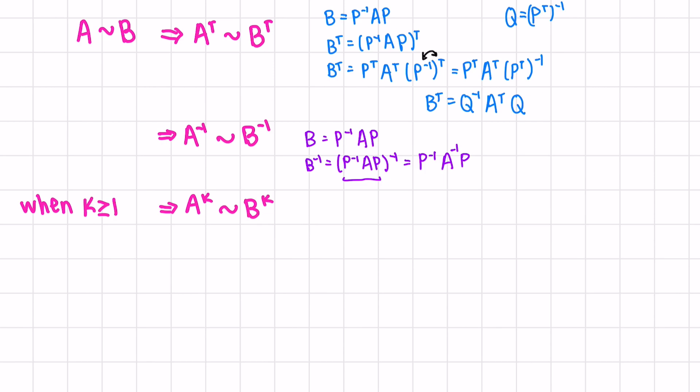Lastly, A to an exponent K, when K is equal to or greater than one, is similar to B to that same exponent. We know that A is similar to B, so let's write what that means. And now let's put both sides to the exponent K. Now what would this mean exactly? Let's make a side note. If we had P inverse AP times P inverse AP times P inverse AP, K times, what would happen?